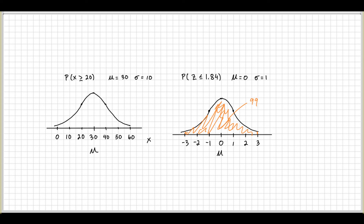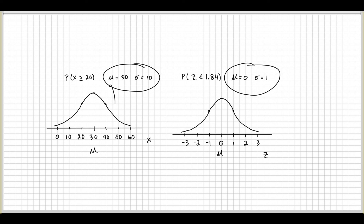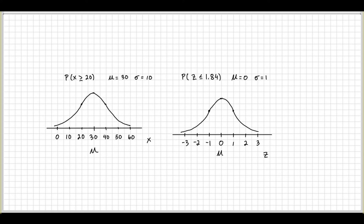We're going to talk about shading the normal next. This random variable is Z — for z-scores — so you can look it up in your z-table. This gives you an understanding of how to draw a normal distribution and how to draw a standard normal using two values: population mean and standard deviation. You only need those two pieces of information to draw the curve.